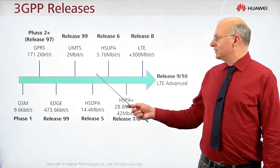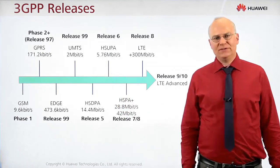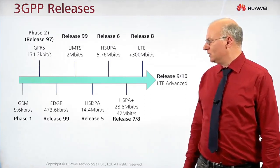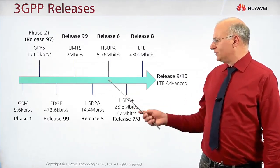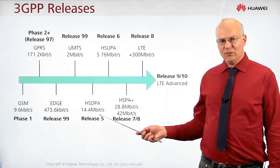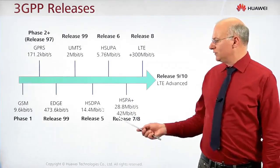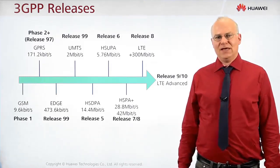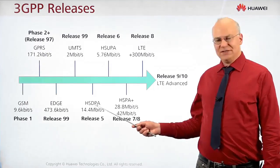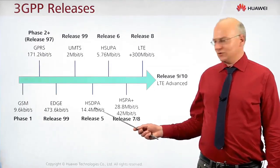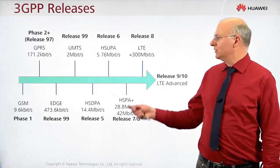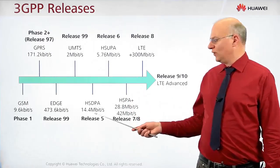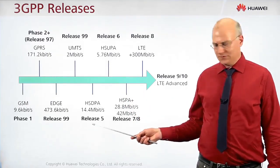The next important step in the development of the radio technology was the introduction of High Speed Downlink Packet Access, HSDPA. This has a higher data rate than the first version of UMTS, increased from 2 to 14.4 megabit per second in the downlink.